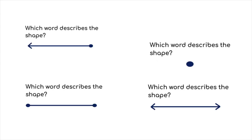Now it's time to practice. Which word describes this first shape? Well, we have a start point, but then we go on and on in only one direction. So remember, that's the one I told you that's just like the sun. So we call that a ray.